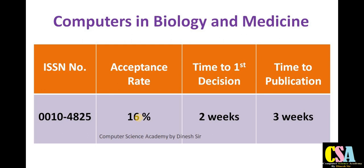The time of the first decision: you will get notification from the journal editor within two weeks — about rejection, acceptance, or minor changes — so within 15 days. The publication timing is only three weeks, so overall from submission to publication this journal takes about five weeks, which is most probably within a month.